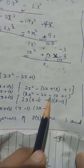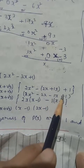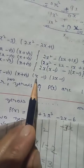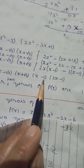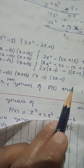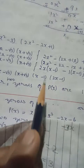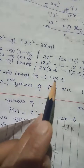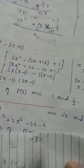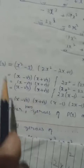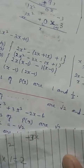Factoring gives (2x - 1)(x - 1). Setting each factor to zero: x - 1 = 0 gives x = 1, and 2x - 1 = 0 gives x = 1/2. So the four zeros of p(x) are: -√3 and √3 (already given), and 1 and 1/2.